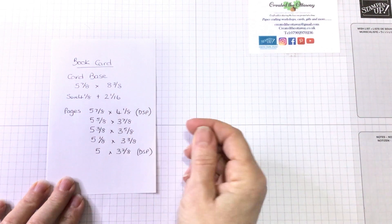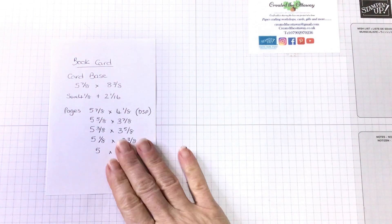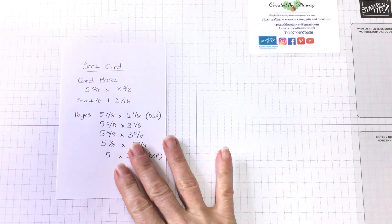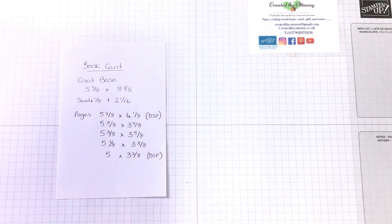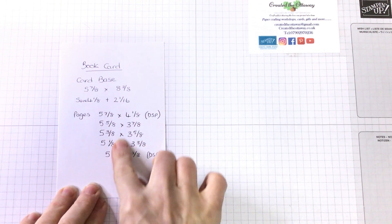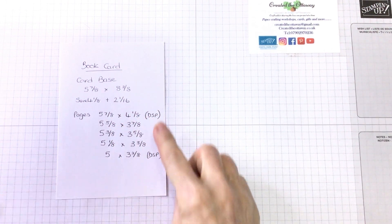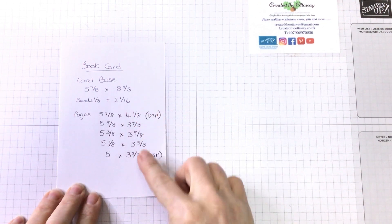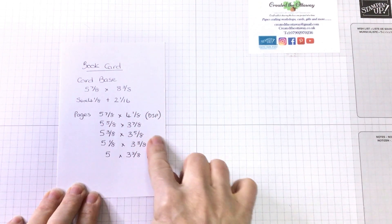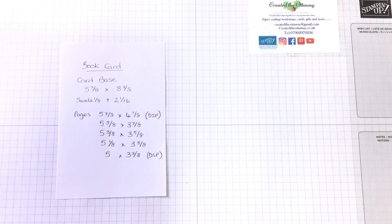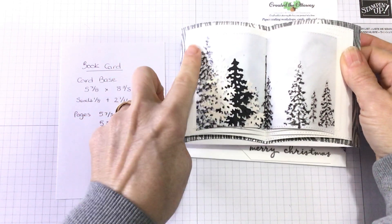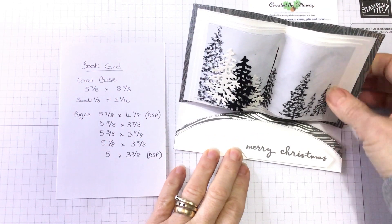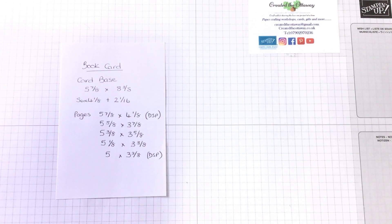So we need a few different pieces. We need a card base, which is basically an A4 sheet cut in half, that we're going to score to make the easel card. And then the pages of the book, the back piece. There's two pieces that are designer series paper, the very back piece and the very front piece. And then the pages in between, I've just done in white. So the back piece is like that. There's three pages. And then there's another piece for the front.